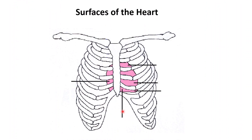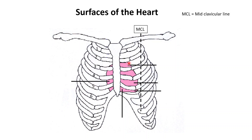Here we have a thorax. I'm going to draw an imaginary line through the midpoint of the clavicle — this is called the midclavicular line. Next I'll label these ribs: first, second, third, fourth, fifth, and sixth rib.